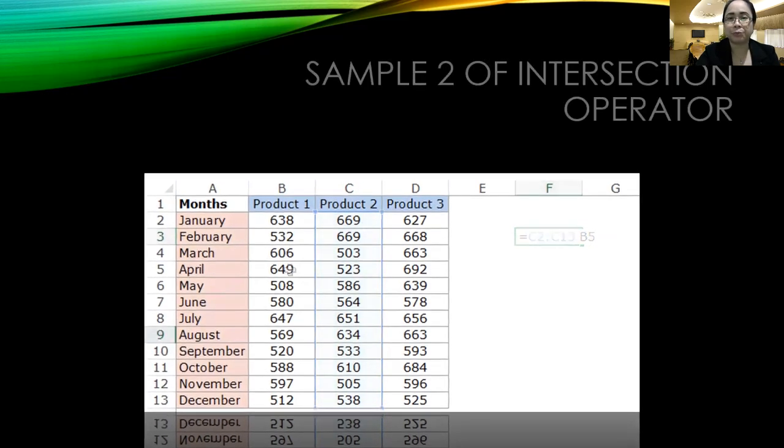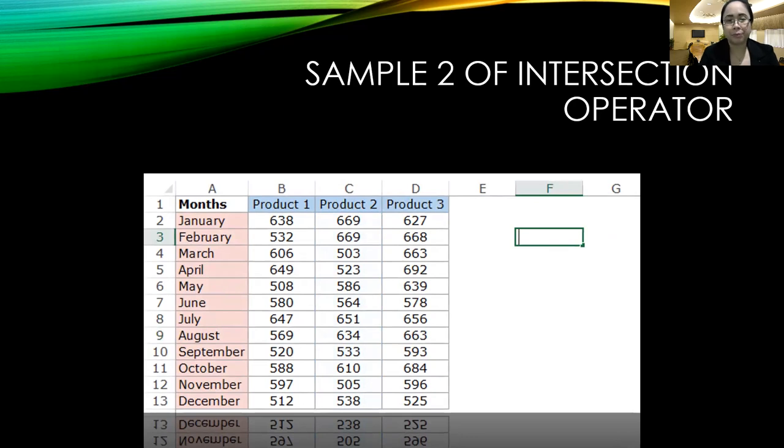Sample number 2 has the same columns: A for month, B for product 1, C for product 2, D is for product 3.